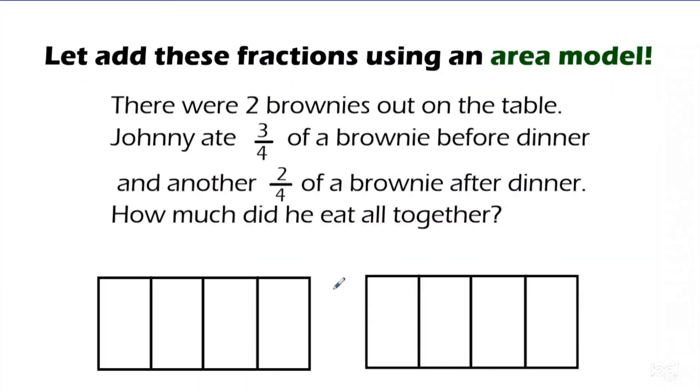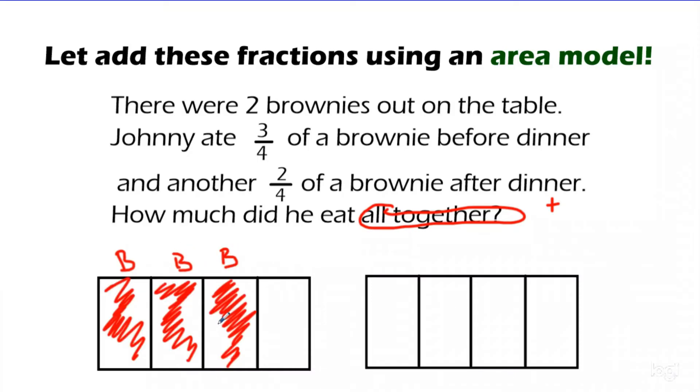So there are 2 brownies out on the table. Here you go. Johnny ate 3 fourths of a brownie before dinner, and then another 2 fourths of a brownie after dinner. Dessert first, dessert after. That's what I love. How much did he eat all together? So I'm going to be bringing my fractions together. I see that my fractions both had a 4 for the denominator. So I've split each whole into 4 pieces. And so here he ate before dinner. So before he ate 3 of them. He didn't quite eat the whole brownie. And then afterwards, he ate 2 fourths of another brownie. So he ate 1 fourth of this brownie and 1 fourth of that brownie. That makes 2 fourths. And we're going to shade these in. How much did he eat all together?